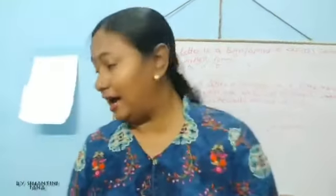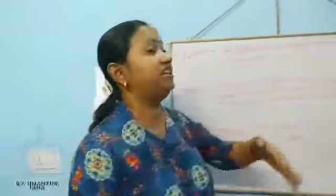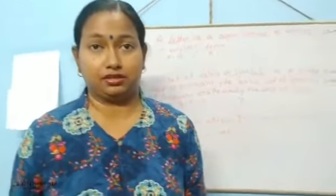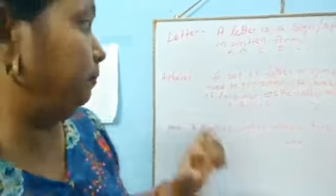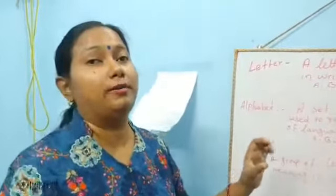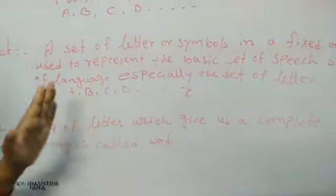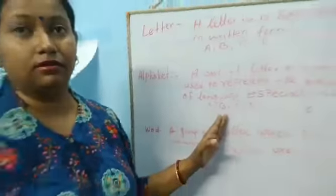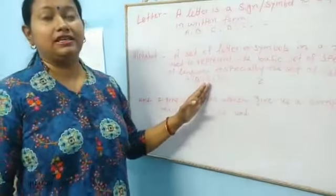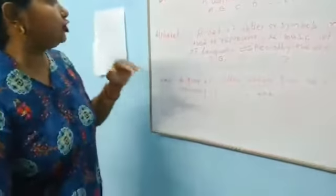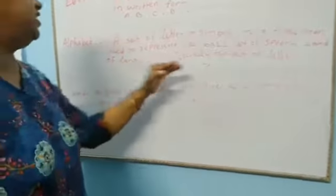We know A to Z is an alphabet. But we cannot write them randomly — like A, then D, then Z. We must write them in a perfect fixed order. After A comes B, after B comes C, after C comes D. There is a fixed order and we follow that sequence — we cannot write T after A, only B comes after A.